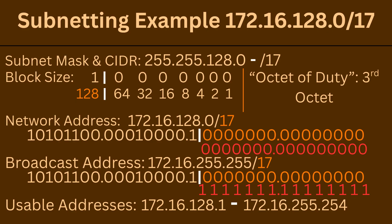The network address is 172.16.128.0 /17. We got this answer because we set all host bits to 0, as indicated in red, then converted. The broadcast address is 172.16.255.255 /17. We got this answer because we set all host bits to 1, as indicated in red, then converted. The usable address range is 172.16.128.1 through 172.16.255.254. We got this answer because we added 1 to our network address and subtracted 1 from our broadcast address.